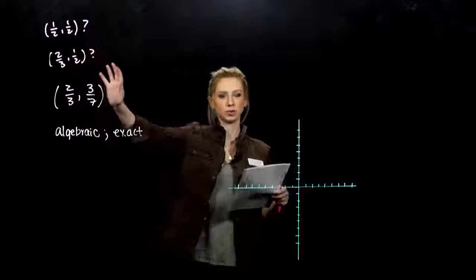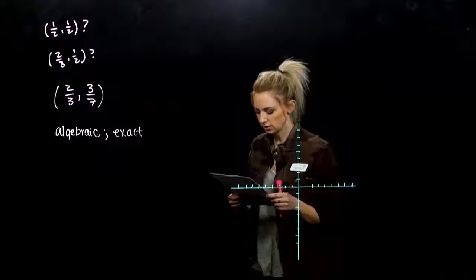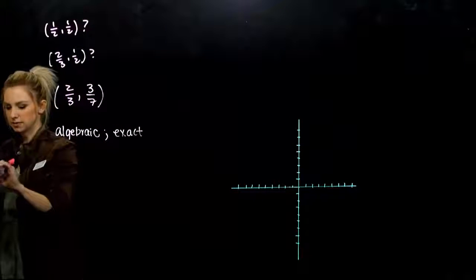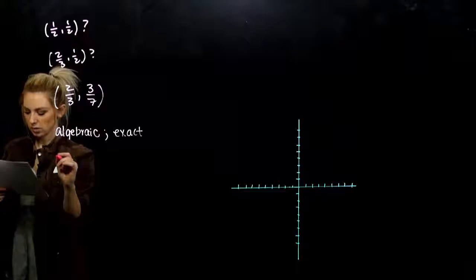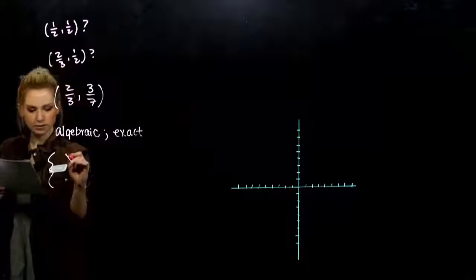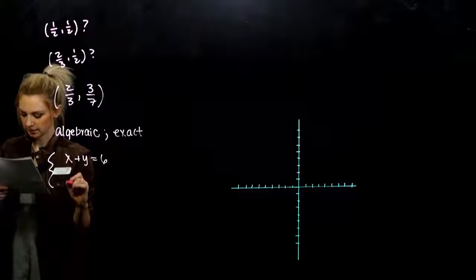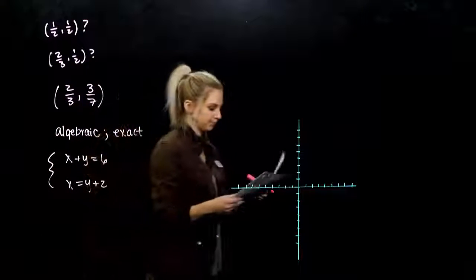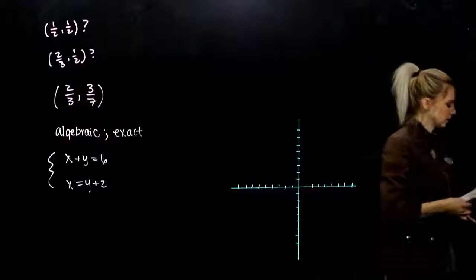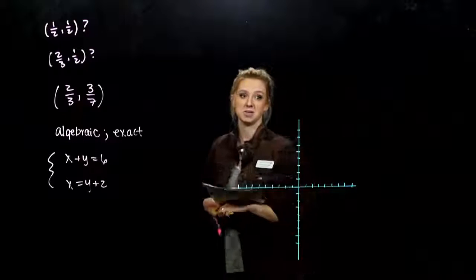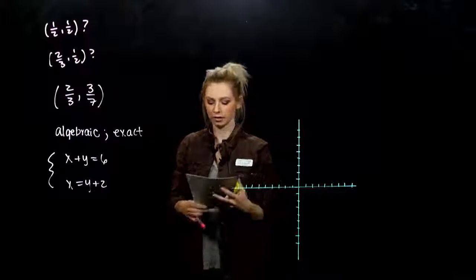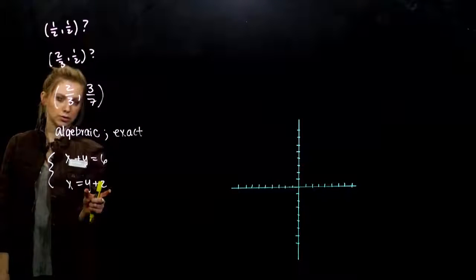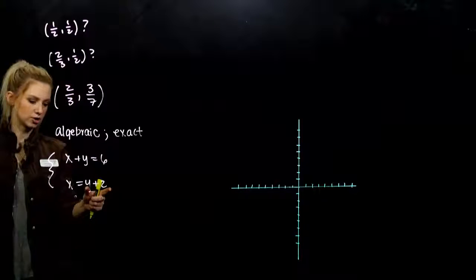We had an idea of what it was around, but we want to have exactly the solution to the system. One non-graphical method for solving systems is known as the substitution method. So that's what we're going to use first. Our first system: x plus y is equal to six, and x equals y plus two is the second. Substitution, as its name sounds, means we take something and substitute it into another. I know that x is equivalent to the expression y plus two.